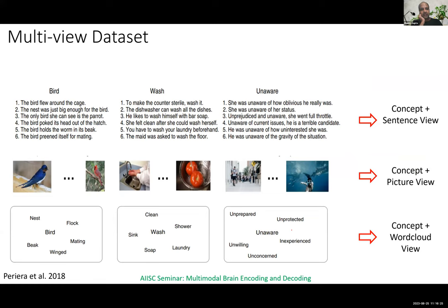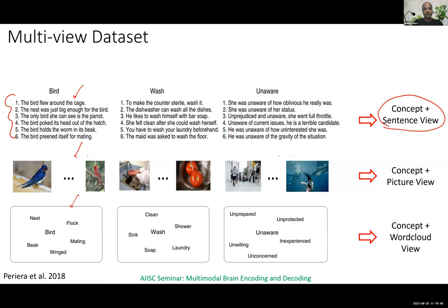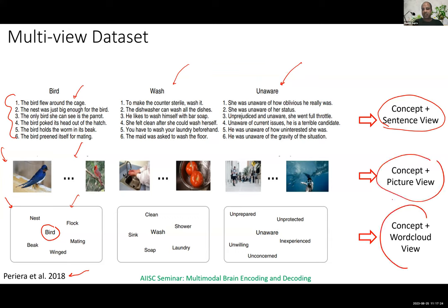To study how the brain captures meaning across multiple views: the concept 'bird' can be presented as sentences ('The bird flew around the cage'), as pictures, or as a word cloud — three different views for the same concept. In the Pereira dataset, some subjects were shown the concept bird with six sentences; others were shown the word 'bird' plus a picture; and some were shown a word cloud where the central word was the concept. Similar views exist for words like 'wash' and 'unaware.'